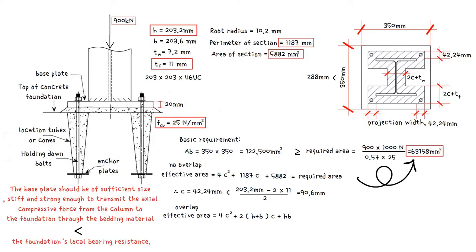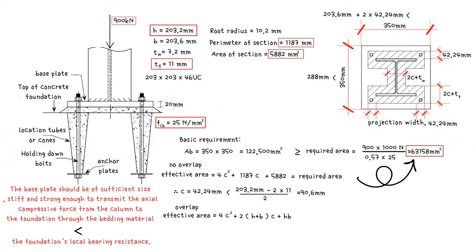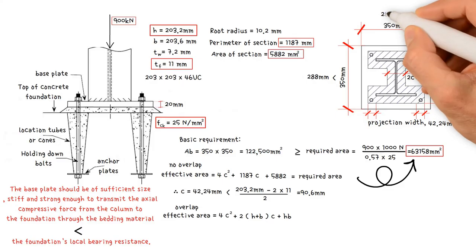Also, the width of baseplate 350 millimeters should be greater than the column width 203.6 millimeters plus 2 times C, 42.24 millimeters. This gives us a value of 288 millimeters. Therefore, the baseplate width is considered satisfactory.